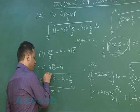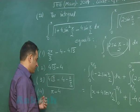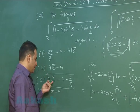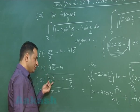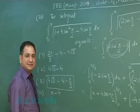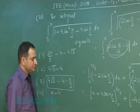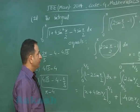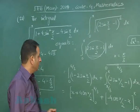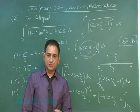Putting in the final values gives 4√3 minus 4 minus π/3 as the result. With that, we move on to problem number 22.